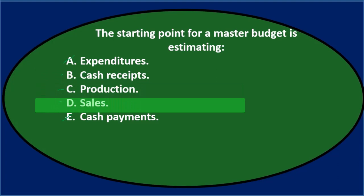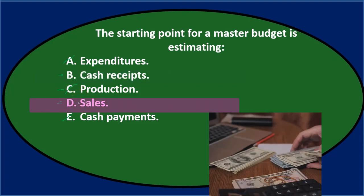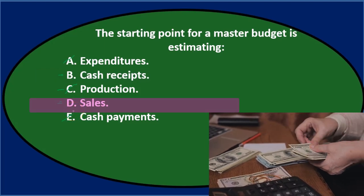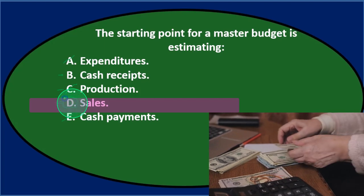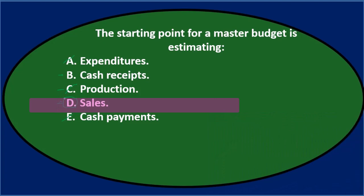Of those three, it would come down to cash receipts or sales before production. And then between cash receipts and sales — we're generally going to go through sales first, because we need to know what the sales are before we can consider what the cash receipts will be. So usually sales comes first, towards the top of our budgeting process. Final answer: the starting point for a master budget is estimating D, sales.